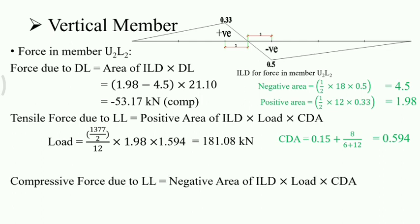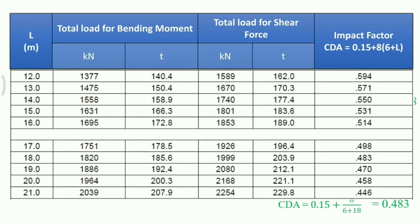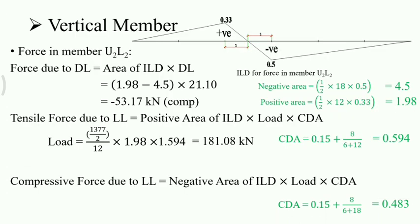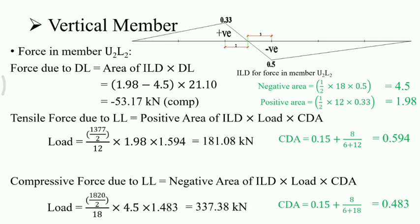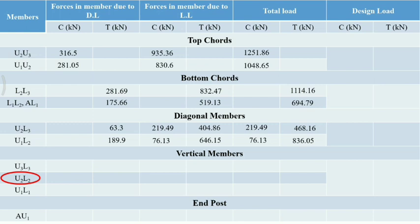Similarly, compressive force due to live load: CDA for the negative area length of 18 m is 0.483. The load for 18 m from the bridge rule is 1820 kN. Per girder: (1820/2) ÷ 18 × 4.5 × 1.483 = 337.38 kN. Feeding all data into the table: for member U2L2, dead load force is 53.17 kN, live load is 337.38 kN compressive and 181.08 kN tensile, giving total loads of 390.55 kN compressive and 181.08 kN tensile.